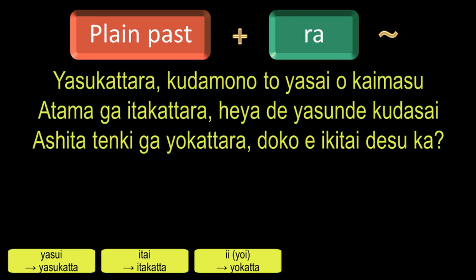Kirai means dislike, and though it ends with I it is actually a Na-adjective. Its plain past form is Kirai Datta. By adding Ra, we will get the condition Kirai Dattara, which means if something is disliked.